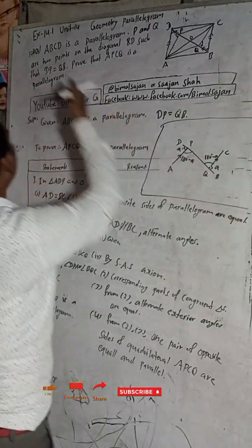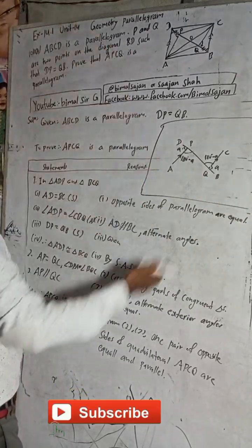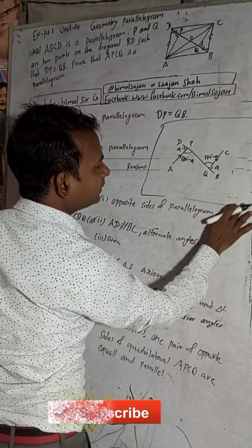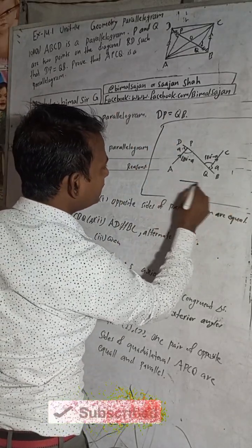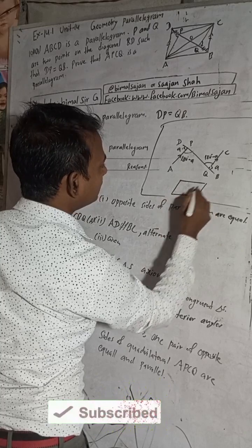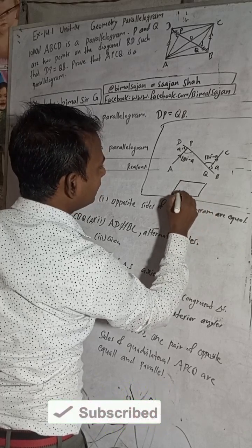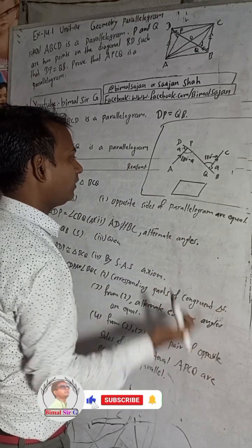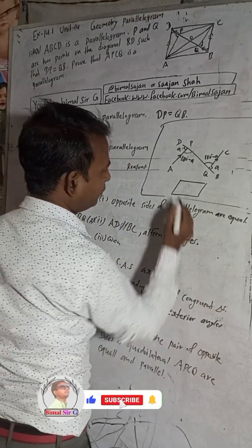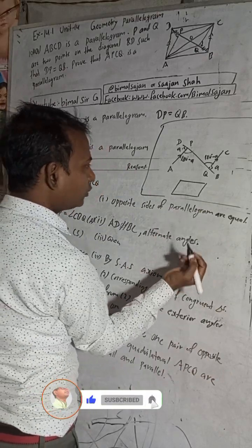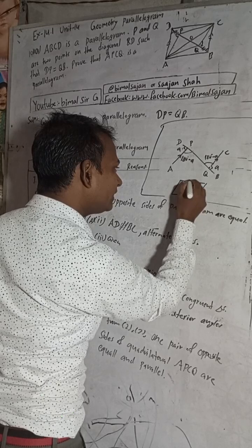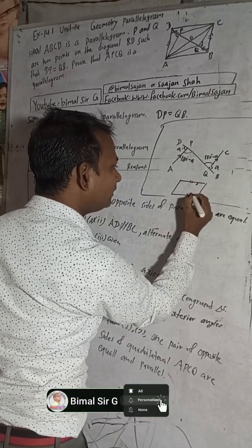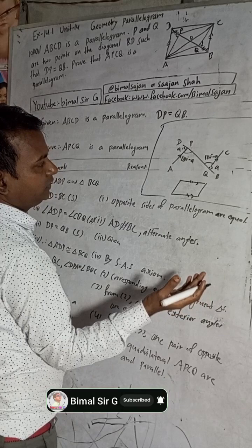I have already explained this in 10B and 10C. In a quadrilateral, if one pair of opposite sides are equal and parallel, then that quadrilateral is a parallelogram. This is the condition.